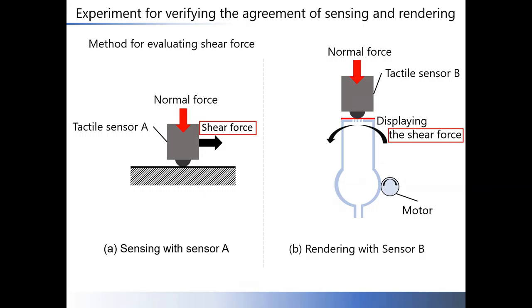The display's shear force is measured by sensor B. The sensor A senses shear force, the magnitude and direction, and the sensor B measures the force displayed by our display.